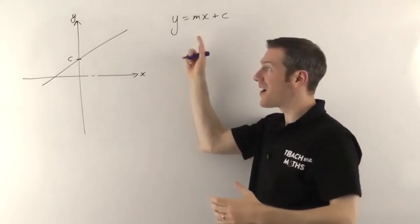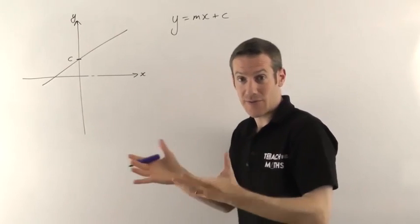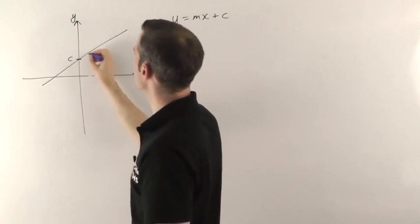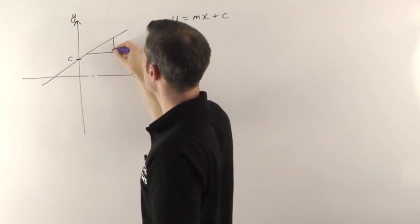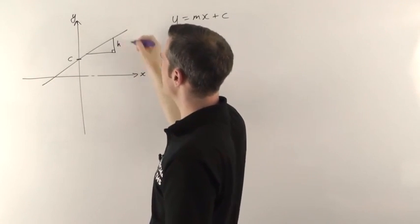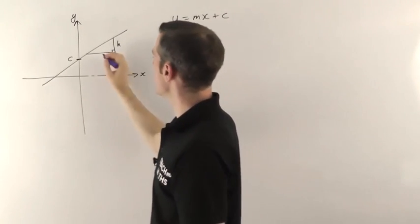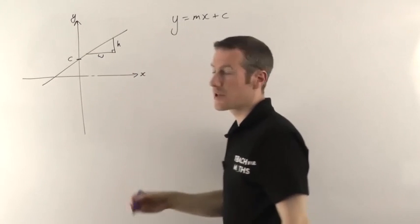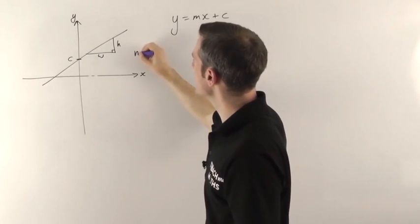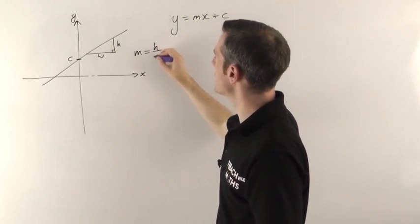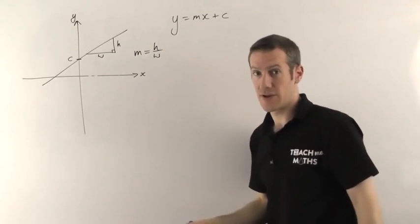I've done another video on how you find gradients of lines. Essentially, you draw a right angle triangle that sits underneath the line, you work out the height of that triangle and call that h, the width of the triangle, say that's w, and then m, the gradient, is simply the height of the triangle divided by the width of the triangle.